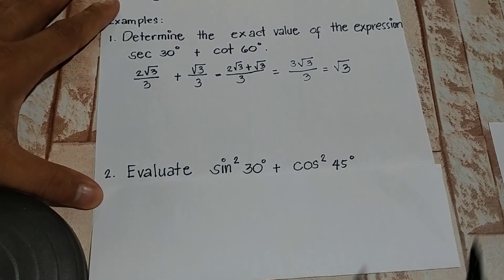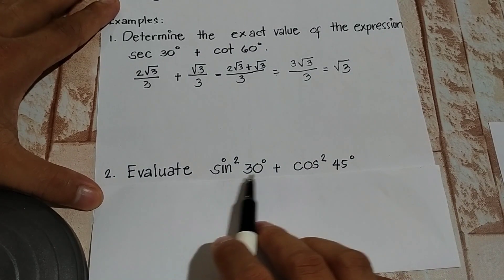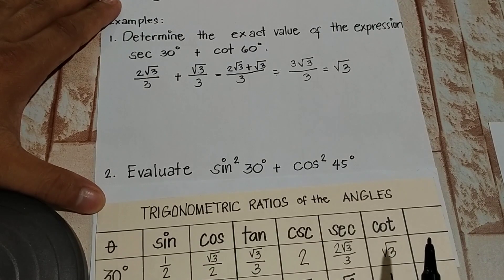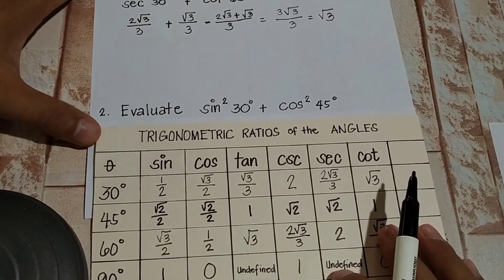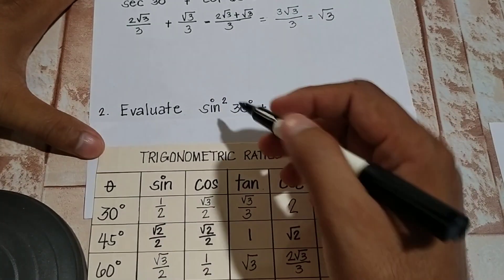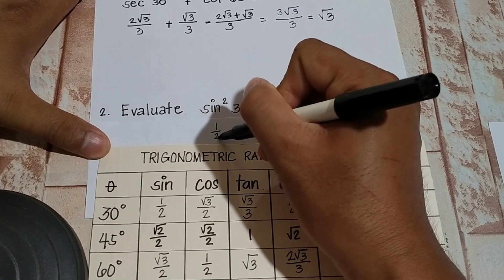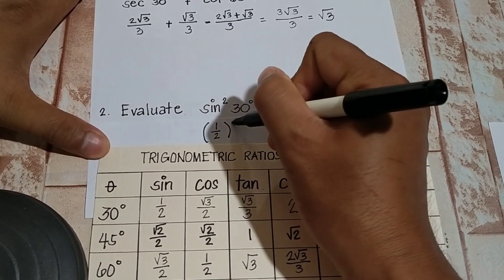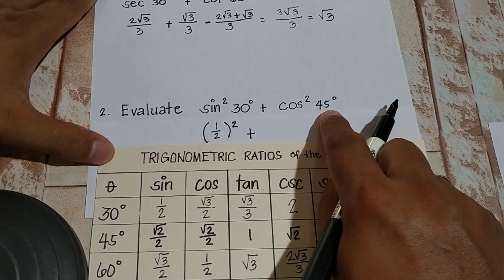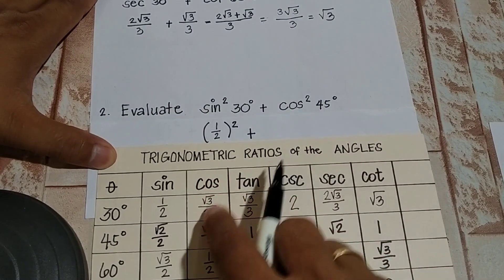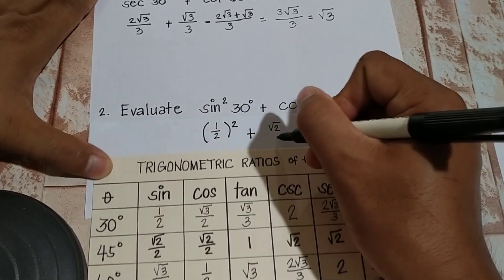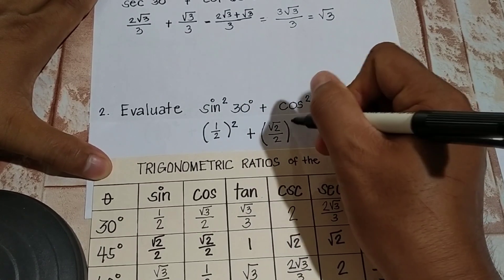Moving on to problem number 2: evaluate sine squared 30 degrees plus cosine squared 45 degrees. So sine 30 degrees is equal to 1 half — so we have 1 half, squared, plus cosine 45, which is square root of 2 over 2, then squared.